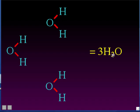Don't confuse the big number in front with the subscript numbers. The subscript numbers are always small, written lower down, and come after the atomic symbol — like the 2 in H₂ means two H's. The number in front is a bigger number, it's not a subscript, and it means how many of the molecules there are. So 3H₂O means three water molecules.